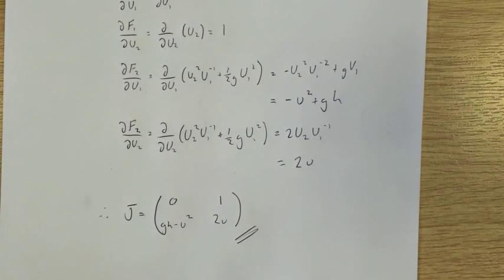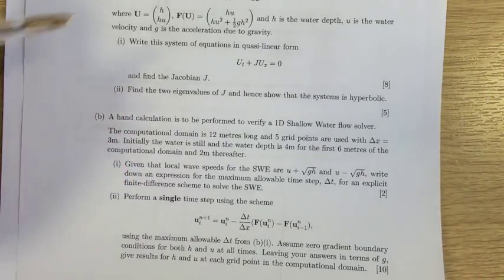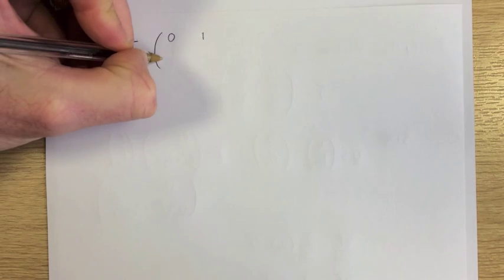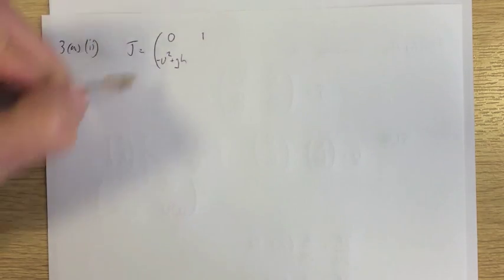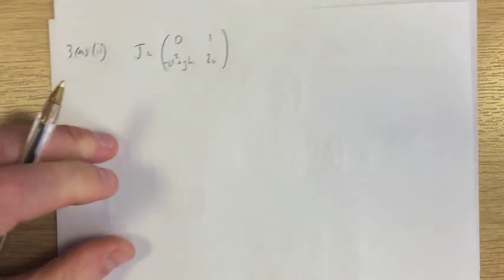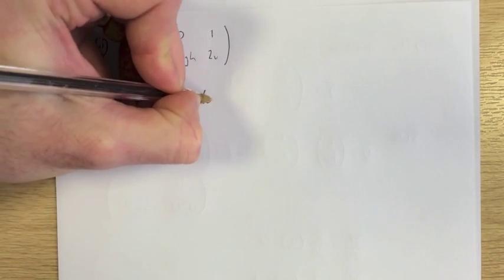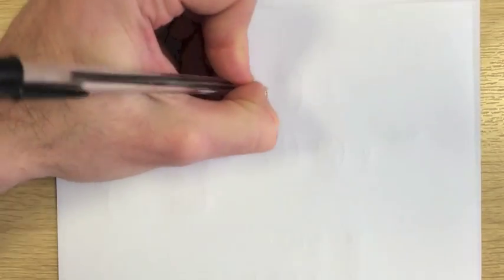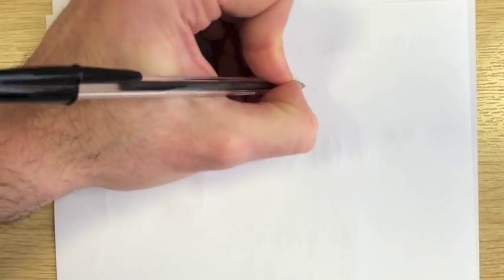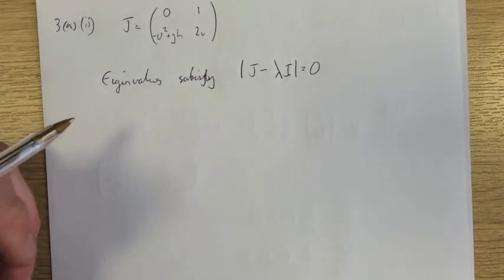That's the solution to part 1. Part 2 is to find the two eigenvalues. Just to remind us, the Jacobian was [0, 1; GH minus U squared, 2U]. Eigenvalues satisfy the determinant of (J minus lambda times the identity matrix) equals zero — the standard definition of eigenvalues. So we take the determinant of the matrix [−lambda, 1; GH minus U squared, 2U minus lambda] equals zero.